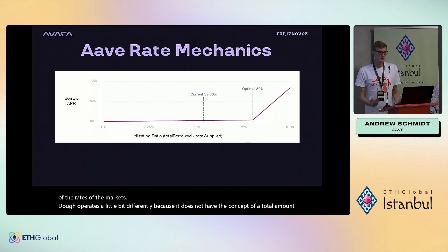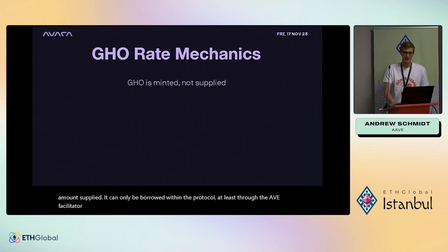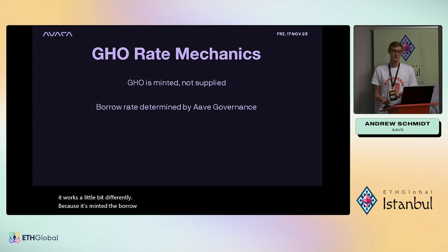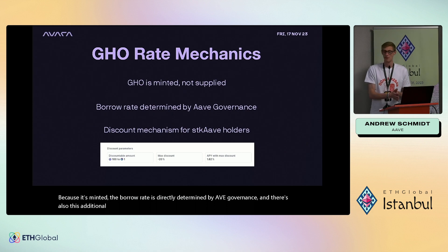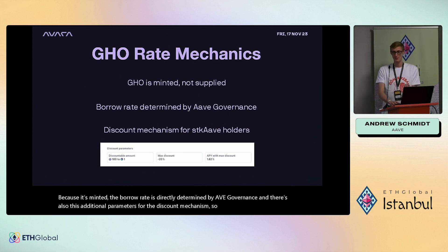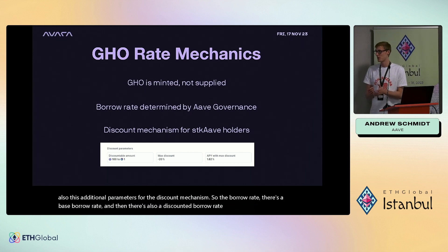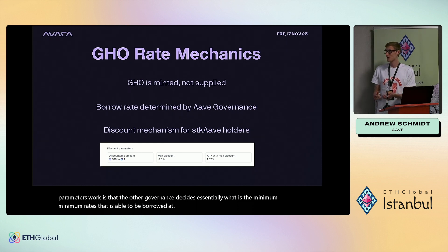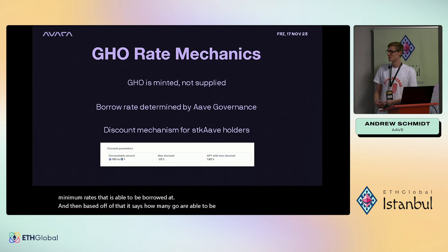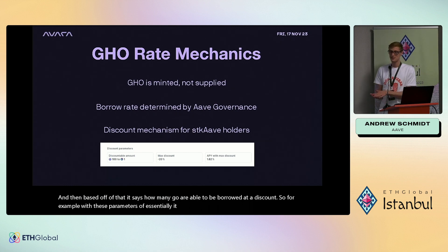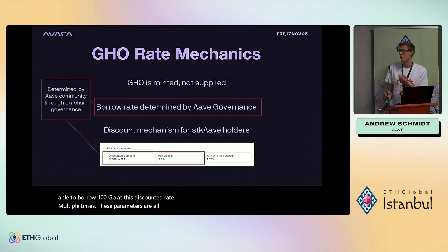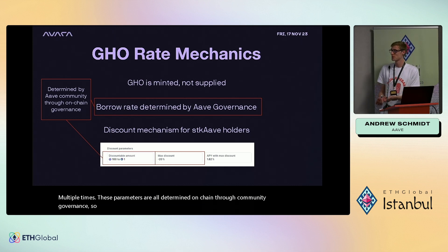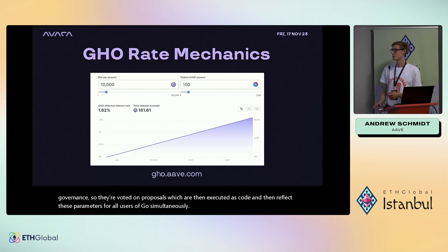GHO operates differently because it has no concept of a total amount supplied — it can only be borrowed within the protocol through the Aave facilitator. Since it's minted, the borrow rate is directly determined by Aave governance. There's also a discount mechanism: a base borrow rate and a discounted borrow rate. For example, for every one staked AAVE you hold, you can borrow 100 GHO at the discounted rate. These parameters are all voted on through on-chain community governance proposals.